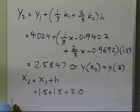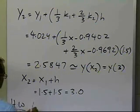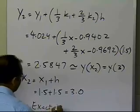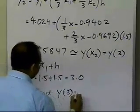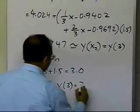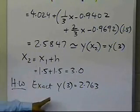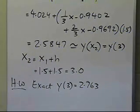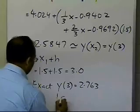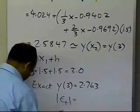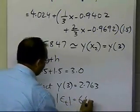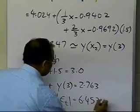Now as an exercise or homework which I would like you to do, the exact value of y at 3 is 2.763, and this is the value which you get to four significant digits by using your ordinary differential equation course knowledge. And the corresponding relative true error in this case turns out to be 6.453 percent.